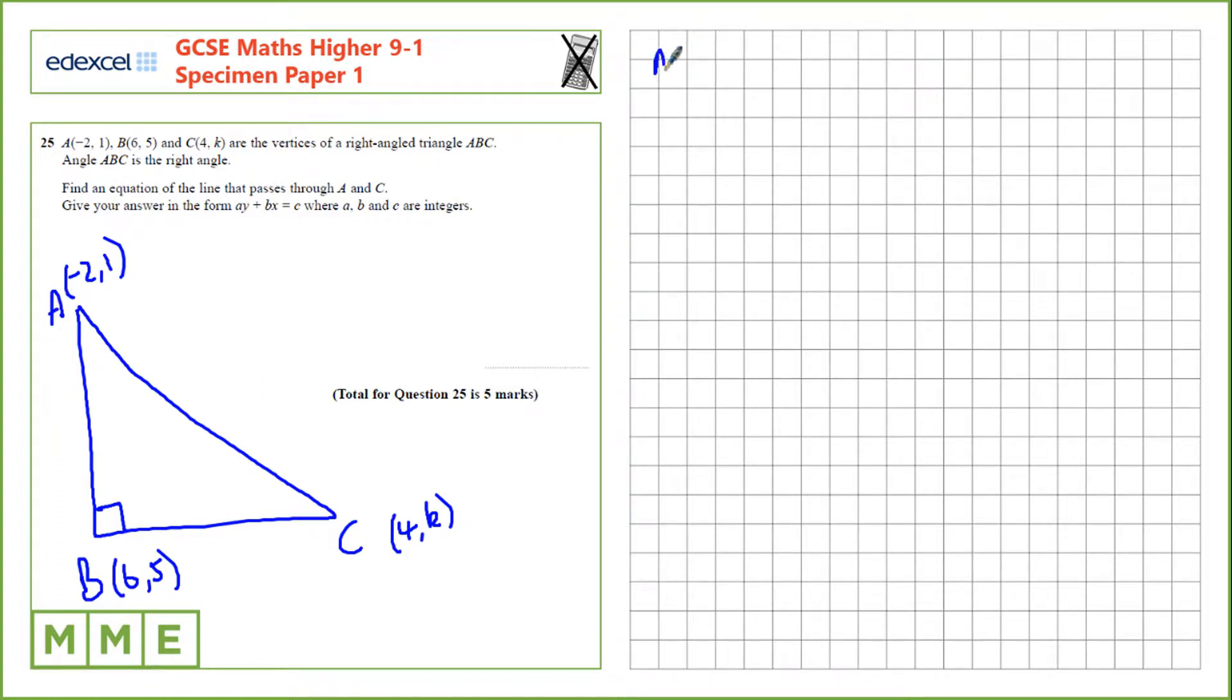Let's first consider the gradient of A to B. So, we take the Y value here, and subtract the Y value here, that's 1, and then the X value here, and subtract the X value here. 5 minus 1 is 4, 6 subtract minus 2 is 8, the gradient of that line is a half.